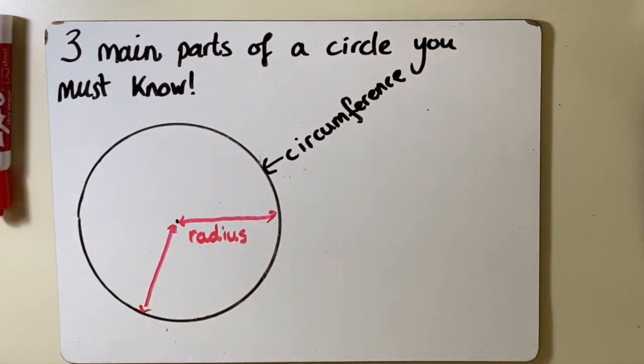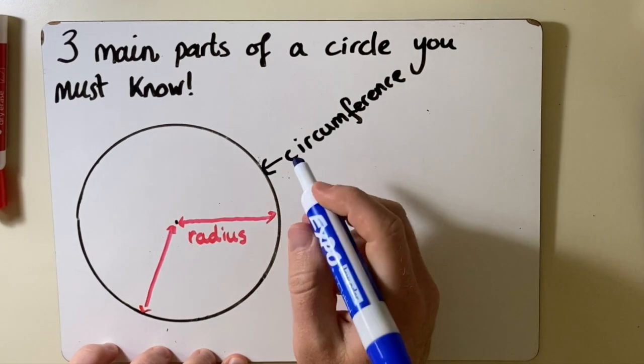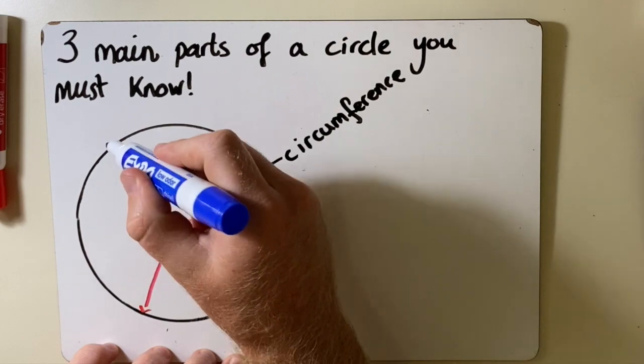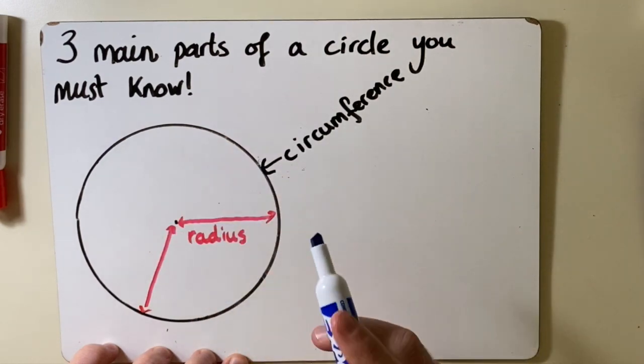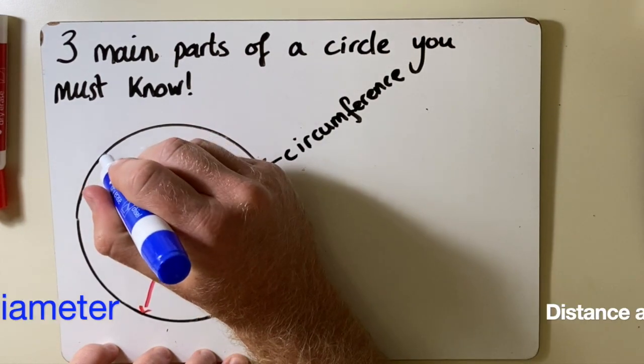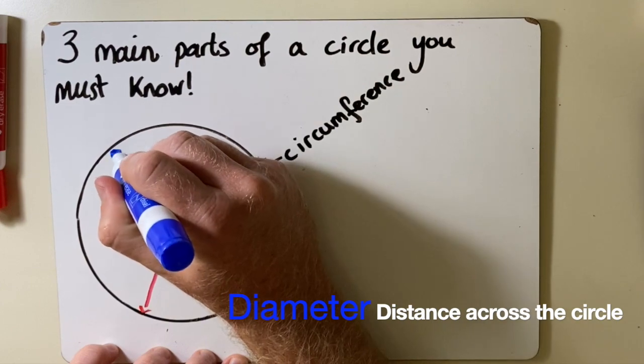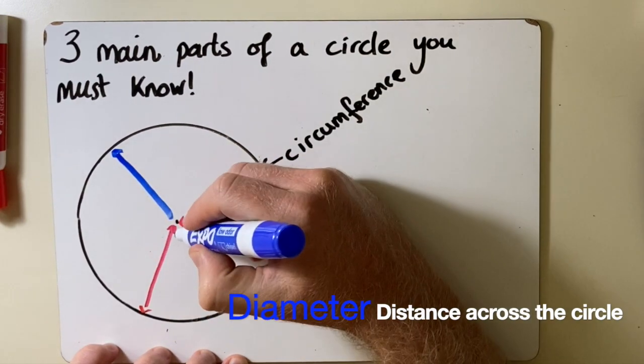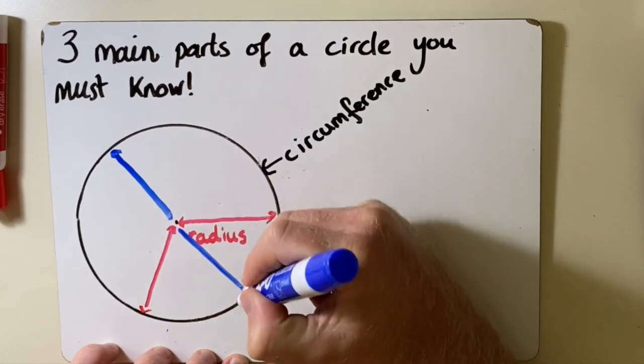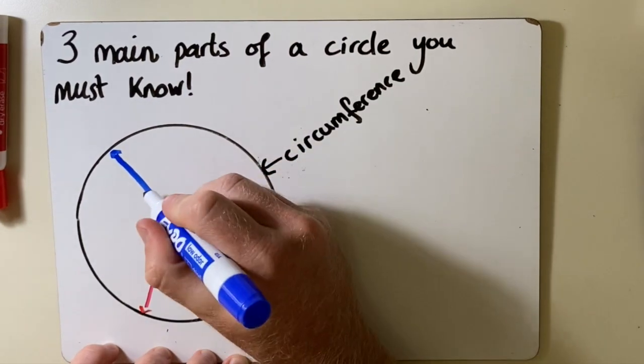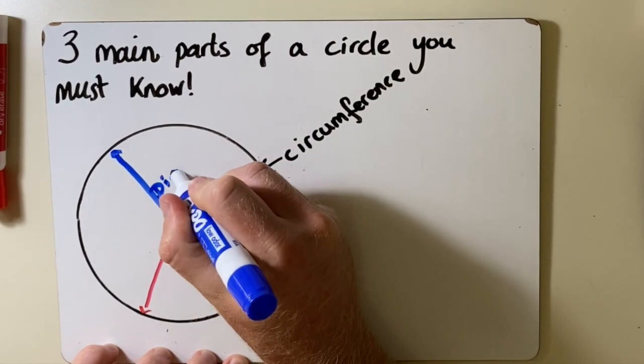Now the next one that you need to know is the diameter. The diameter is from one side of the circle to the other. So I could draw this shown here, one side of the circle all the way to the other side of the circle. That is called the diameter.